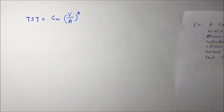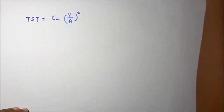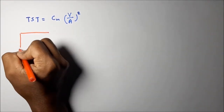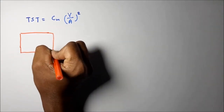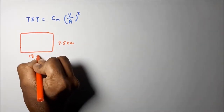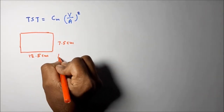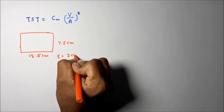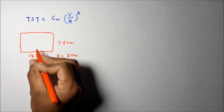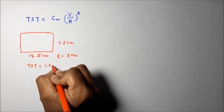First, the object dimensions are given. If we draw the object, it is a rectangular plate. The dimensions are: 7.5 cm × 12.5 cm, and the thickness of the plate is equal to 2 cm. For this part, the total solidification time is given as 1.6 minutes.